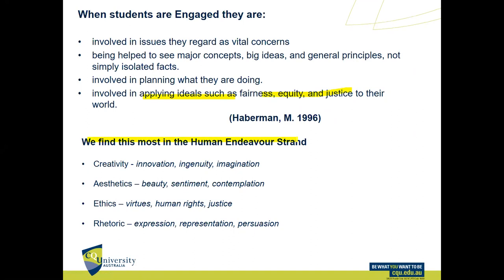Habermann was well before his time, and we can find these concepts most alive in the human endeavour strand. We can look at things like creativity — role playing, art, poetry. We don't all have to be scientists, but we could all be creative spirits. And if we are creative spirits, then we are innovating, talking about ingenuity and imagination. When we do that, we can raise aesthetics, beauty, sentiment, contemplation, and ethics — virtues, rights, and justices. And this wonderful thing called rhetoric — what we call science literacy — is really about expression, representation, and persuasion. So the human endeavour strand is a really rich way of looking at this engagement equation.